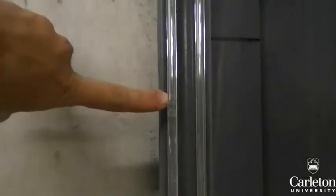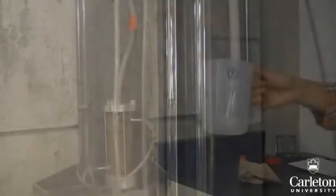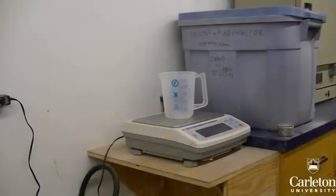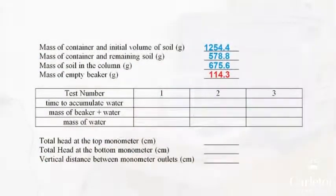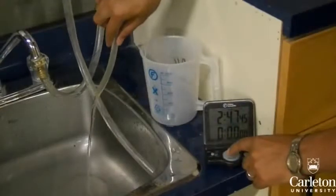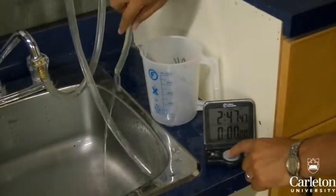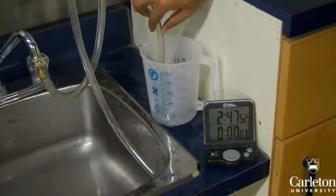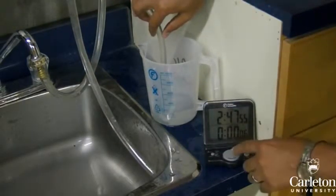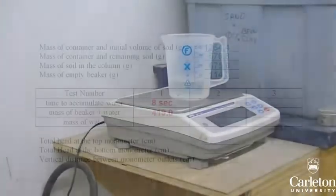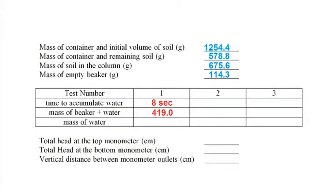Here we can see the pore water pressure being recorded on the two manometers. Now we can start measuring water flow rate. Take a beaker and measure and record its mass in the table. Simultaneously start the stopwatch and begin filling the beaker with the discharge from the test cylinder, aiming to collect about 300 milliliters of water. Simultaneously stop the stopwatch and remove the discharge. Record the mass of the water plus the beaker, as well as the time it took to fill, in seconds.